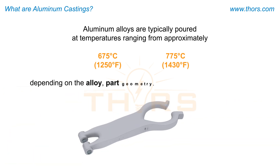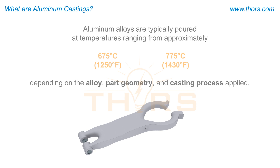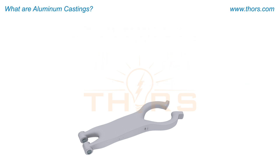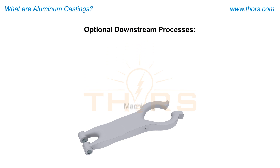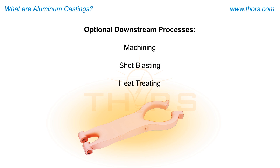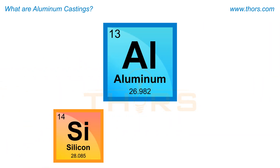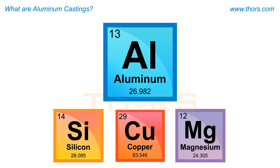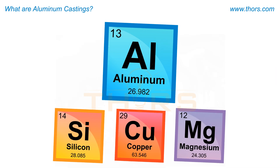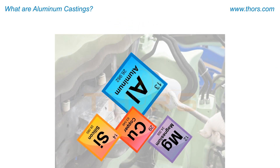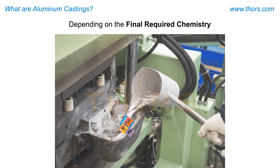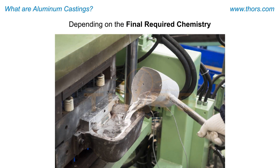the alloy, part geometry, and casting process applied. After solidifying, the castings are removed from the molds. Downstream processes such as machining, shot blasting, and heat treating may also be performed. In addition, silicon, copper, and magnesium are examples of elements that are commonly added to aluminum alloys, depending on the final required chemistry of the castings.